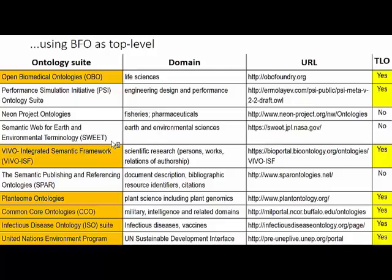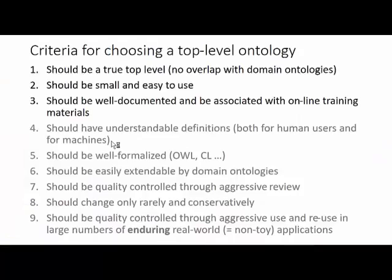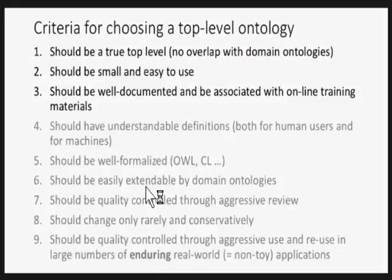The orange ones down the left-hand side are examples of suites which are now being developed, some of which are quite mature, using BFO as the hub. How do you choose which top-level ontology to use as the hub in a suite of ontologies designed to be interoperable and to foster interoperability among the data annotated using those ontologies?